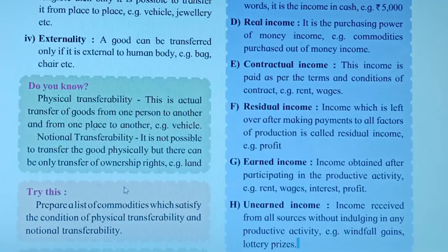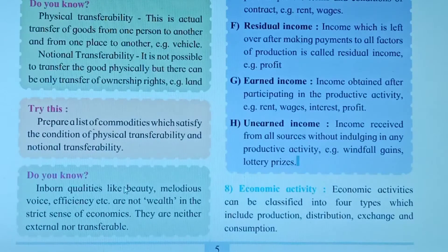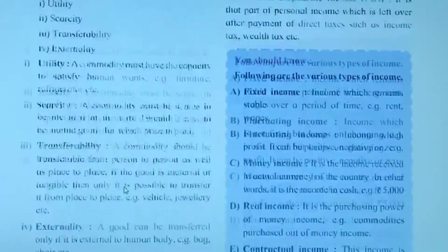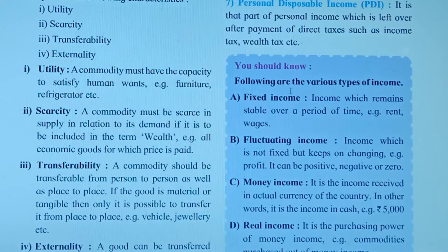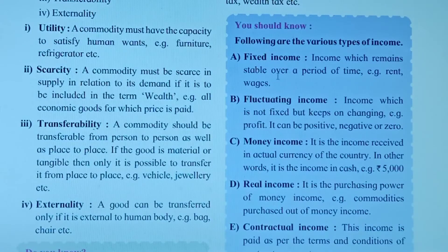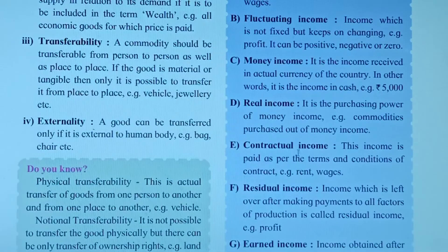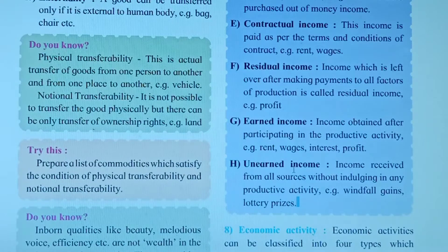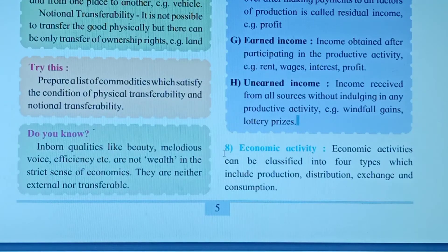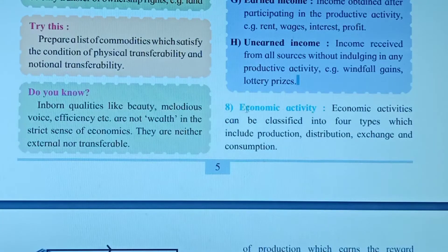Hello students. In our last video lecture we finished up till point seven, that was Personal Disposable Income (PDI). You should know all the types: fixed income, fluctuating income, money income, real income, contractual income, residual income, earned income, and unearned income. Now in this video lecture we will go with economic activity.